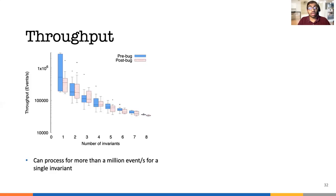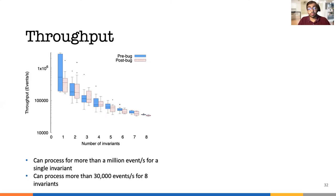For eight invariants, we can process more than 30,000 events per second. As each invariant is different, the throughput is bottlenecked by the slowest invariant. Therefore, we see large variation for a small number of invariants since we are picking the invariants randomly.